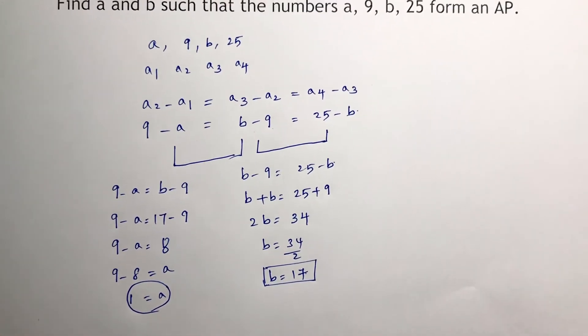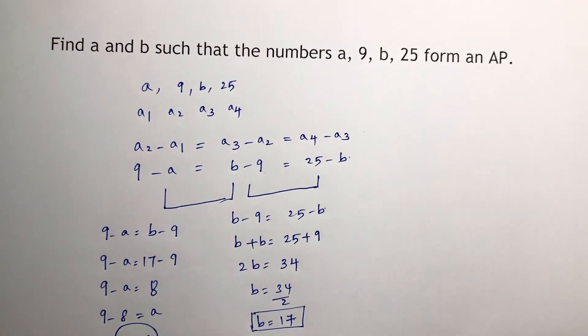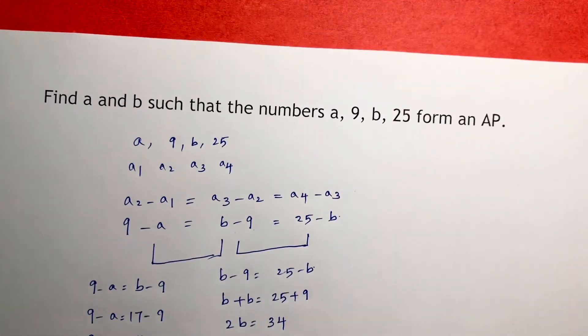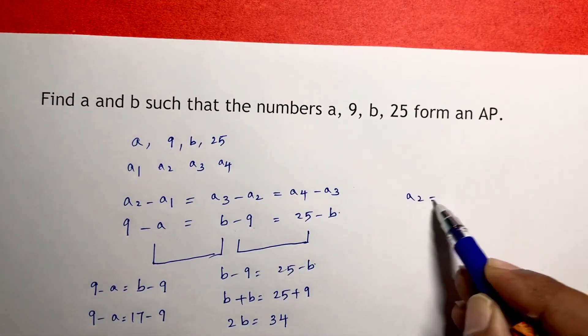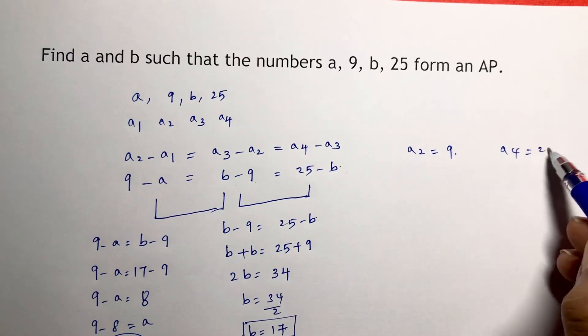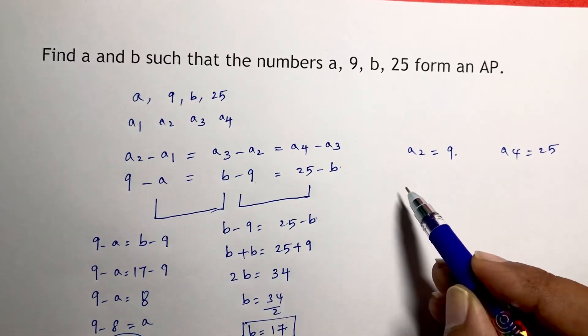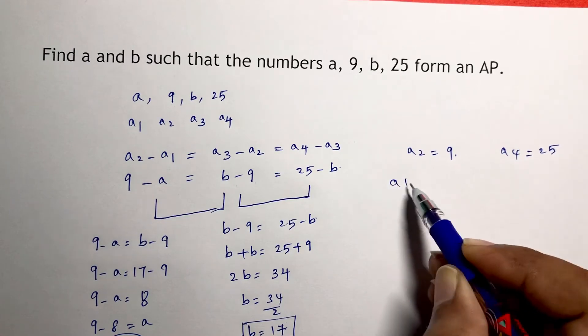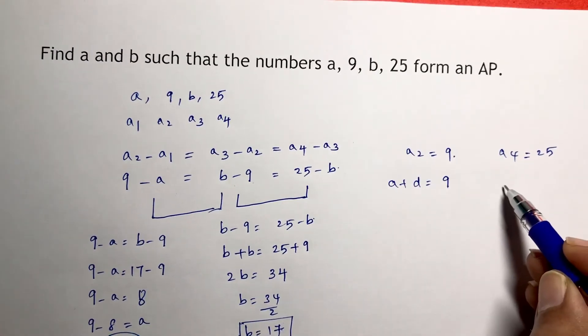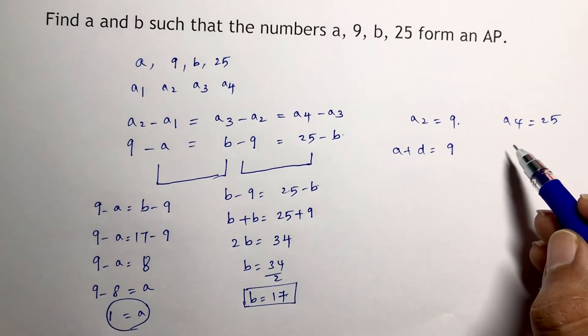Now you can solve this problem in another method. See here, 9 is a2, so a2 is 9 and a4 is 25. a2 is a plus d, and a4 is a plus 3d.